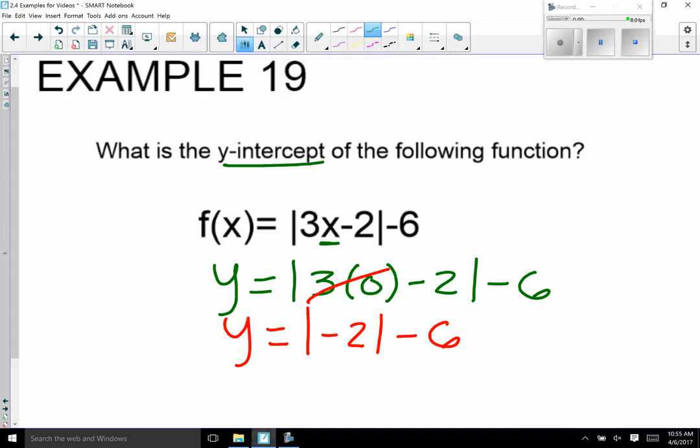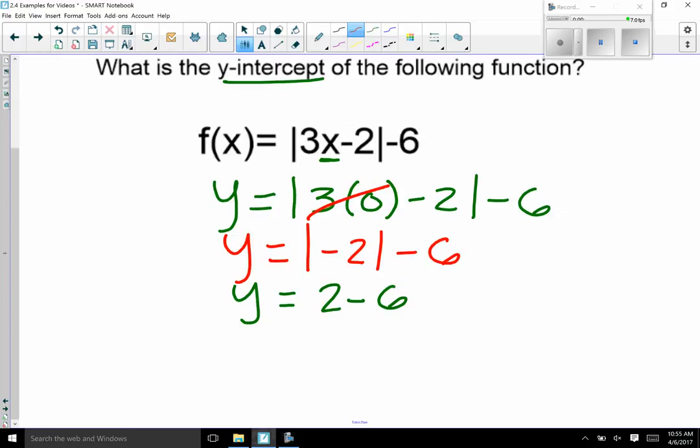Absolute value changes any number inside of it to a positive. So we have absolute value of negative 2 is positive 2, minus 6. So my y-intercept for this example would be 2 minus 6, which is negative 4.